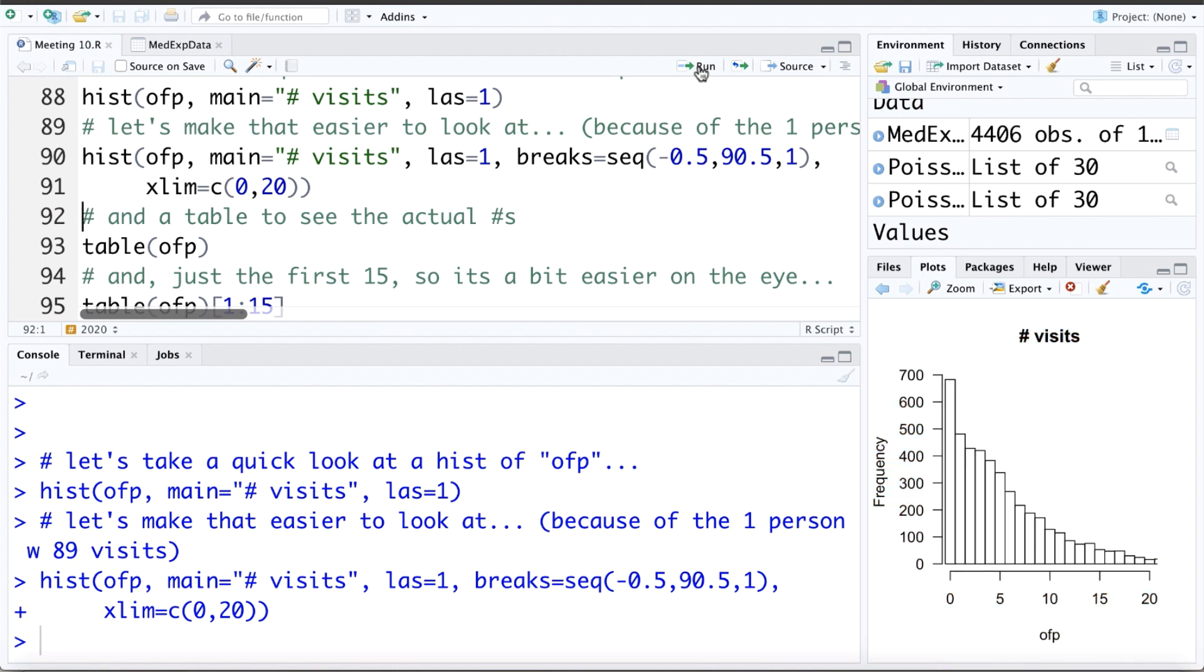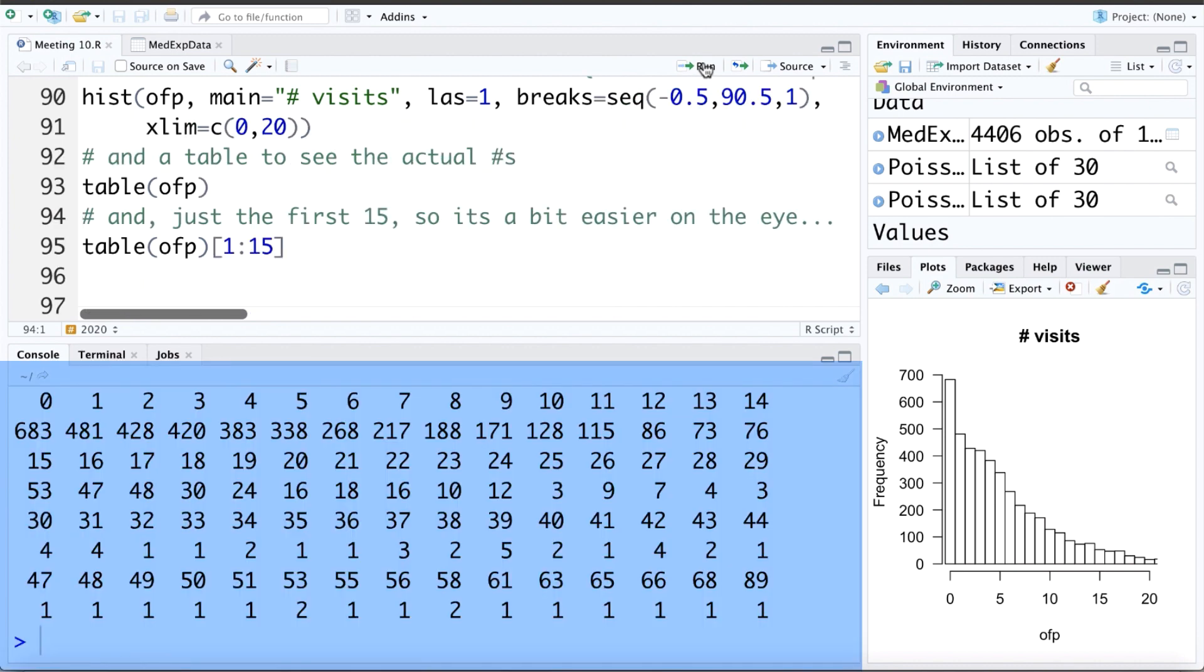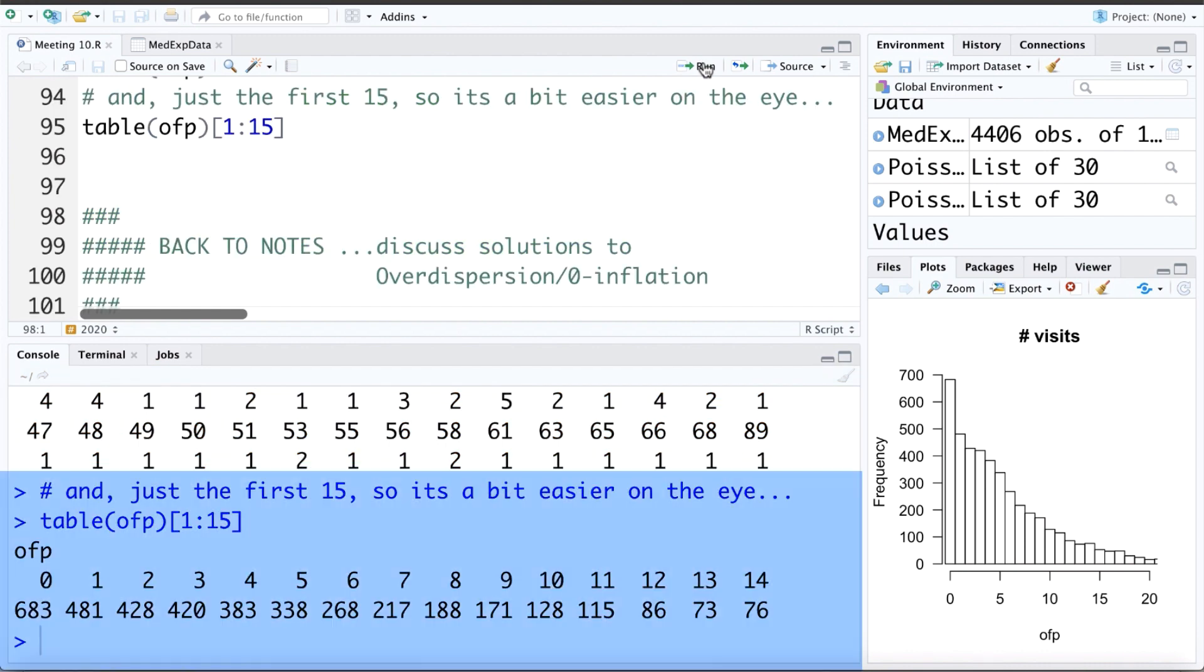If we take a look at a table of the number of visits to a physician, we can use the table command to see that. This is going to be quite large if we look at that here. So what I'm going to ask R to do is show me just the first 15 entries of that table. Here we can see the number of visits. If we start at four visits, there were 383 going down to three visits, there were 420, then two visits, 428, 481 people going only once, and then 683 going zero times. So again, we can see a big jump in zero, or more zeros than we'd expect for a Poisson distribution.